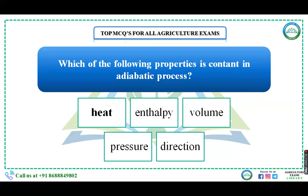Which of the following is constant in an adiabatic process — heat, enthalpy, volume, pressure, or direction? Pressure is constant in an isobaric process. Volume is constant in an isochoric process. Direction relates to isotropic processes. In an adiabatic process, heat is constant. So the answer is heat.